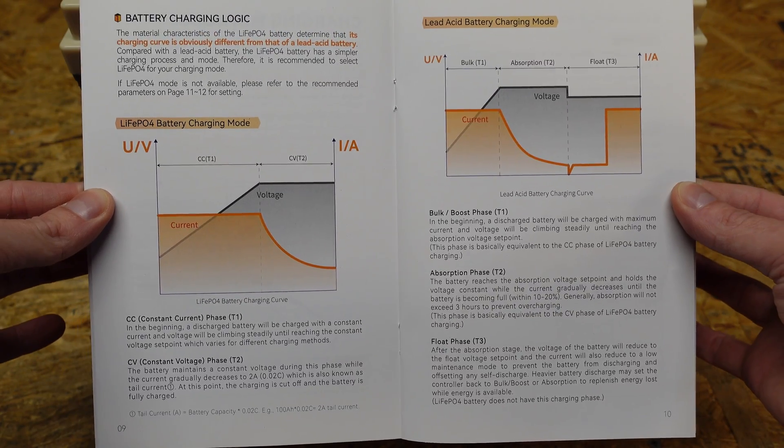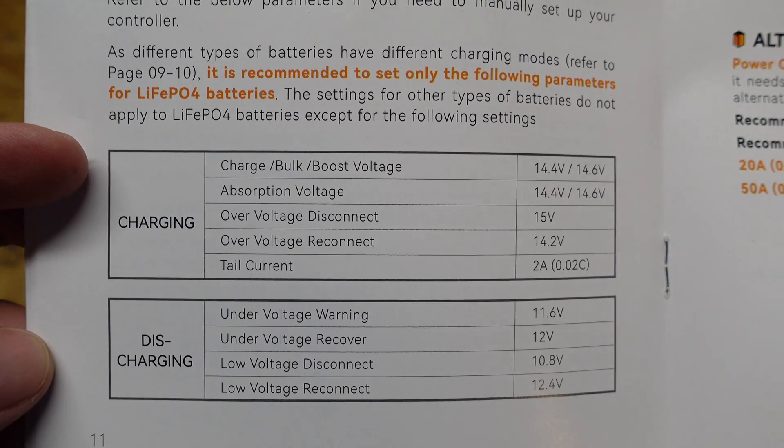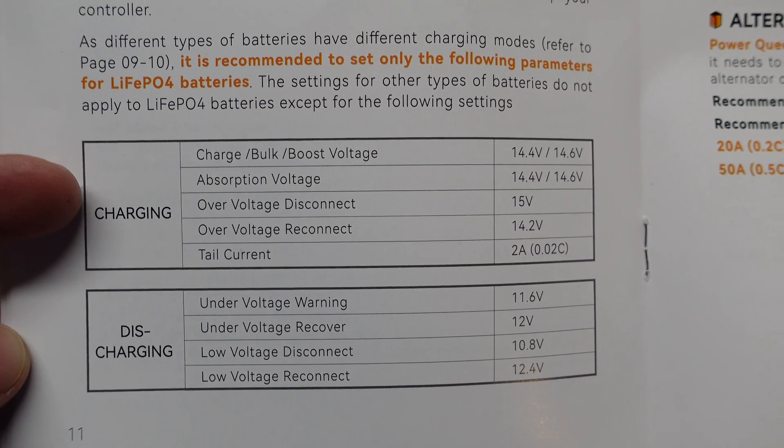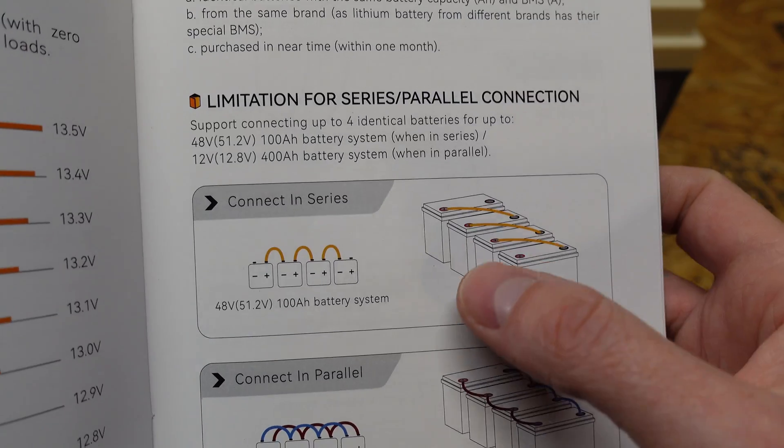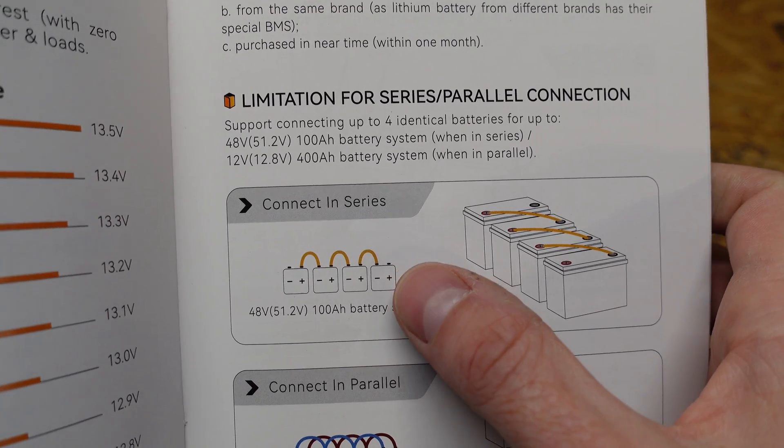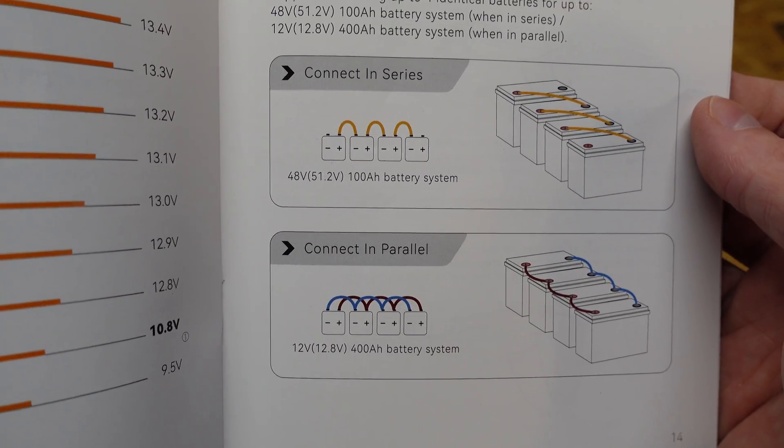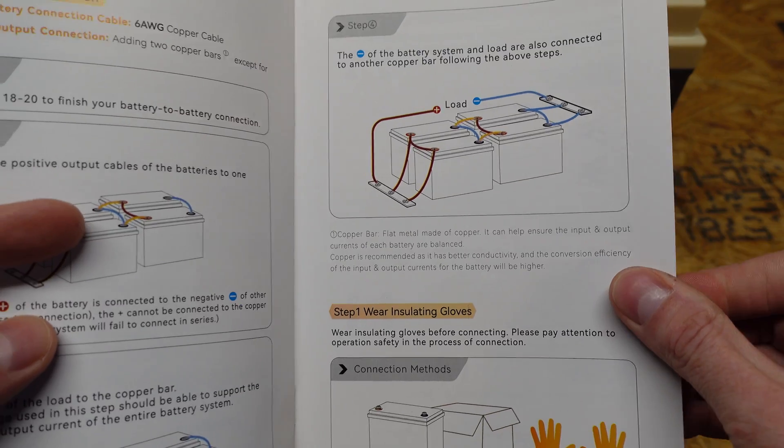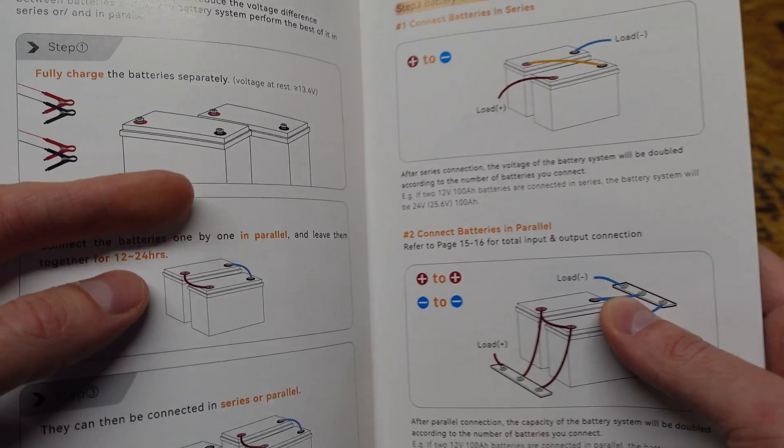And we have a nice explanation of the various stages of the lithium iron phosphate charge profile. We have some recommended settings for your charge controller or inverter. Up to four of these in series for a 48 volt system. But again as I've said before many times we can't guarantee that the heaters will turn on and off at the same time so I'm not sure how that would work with a series connection. And then we have a few pages showing the connections of various parallel and series configurations.